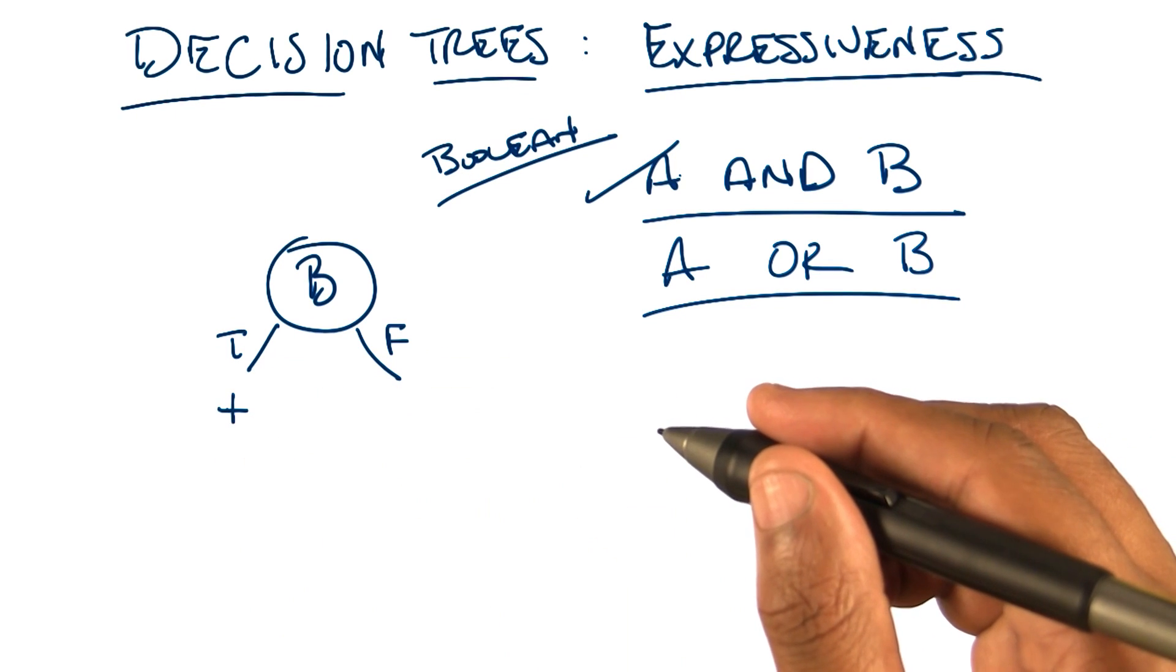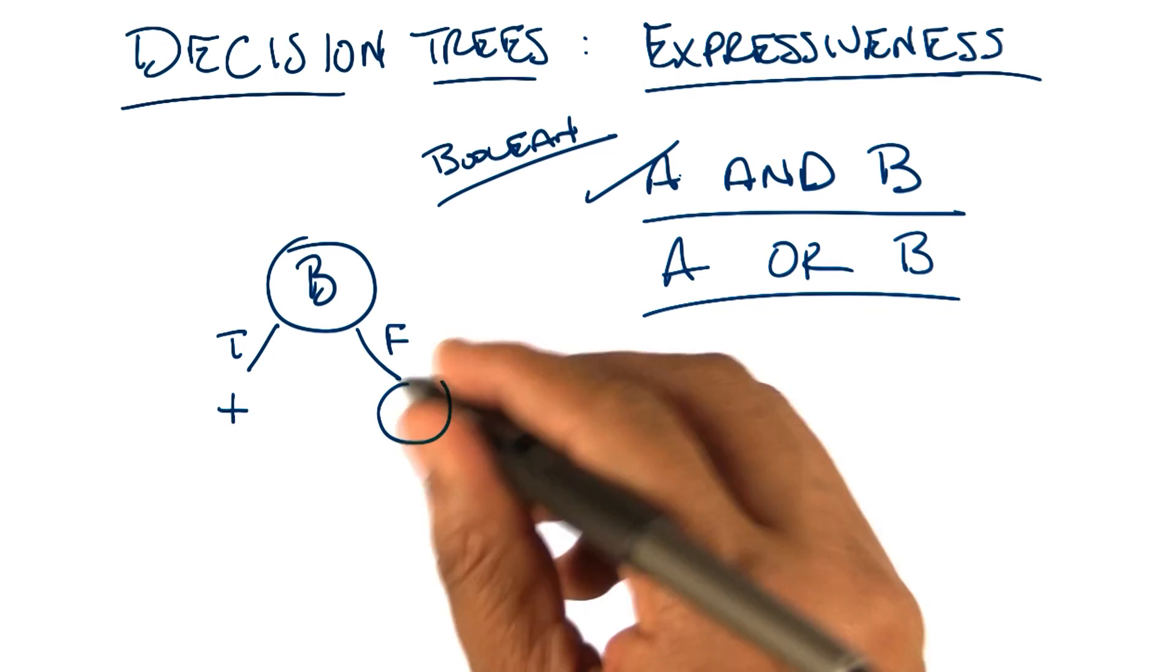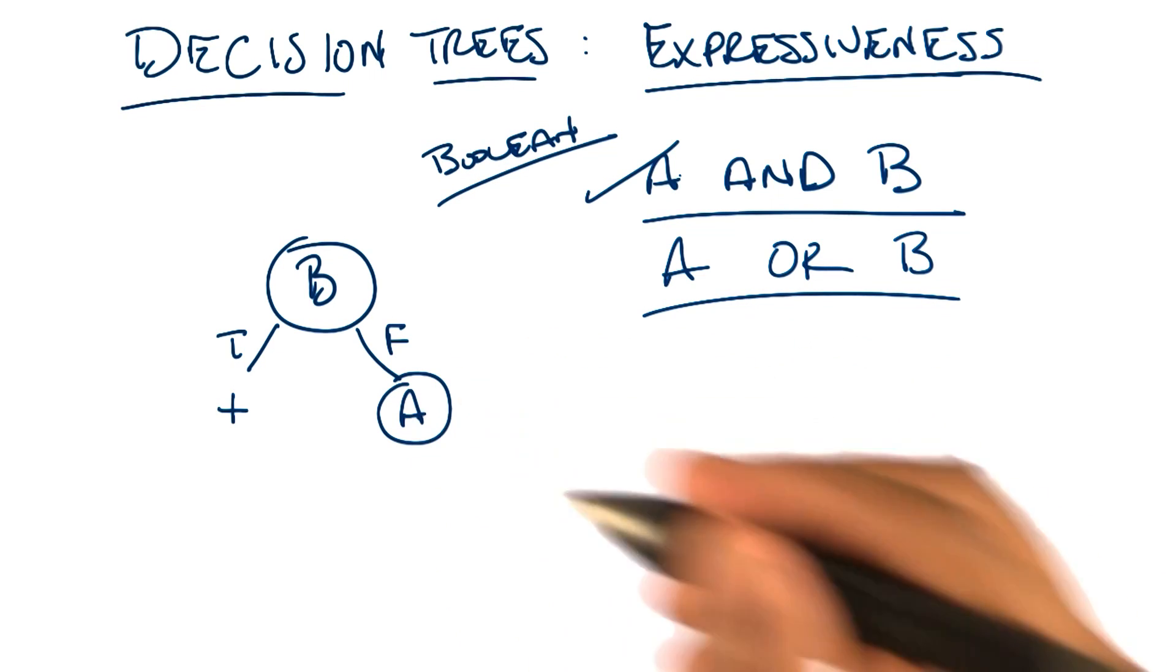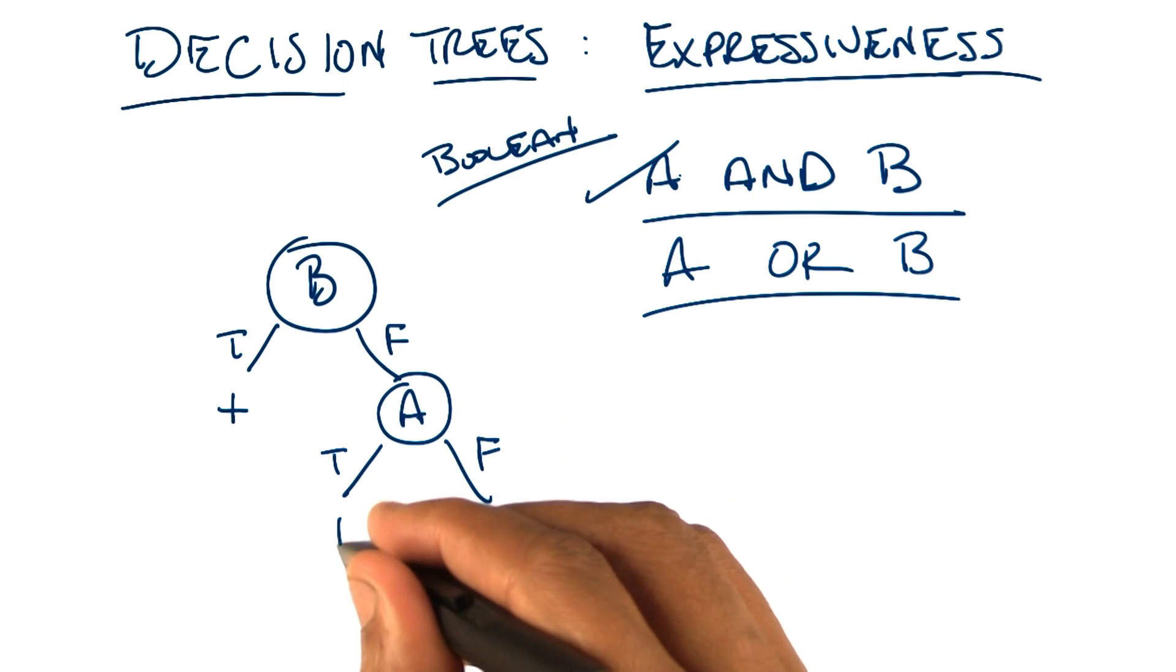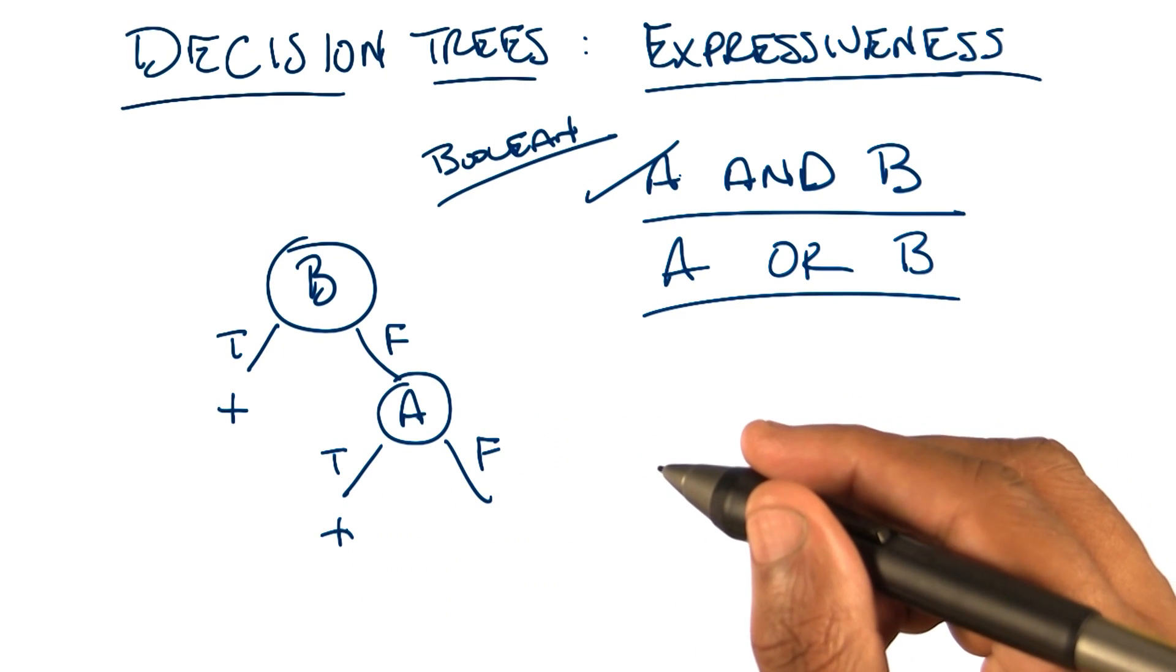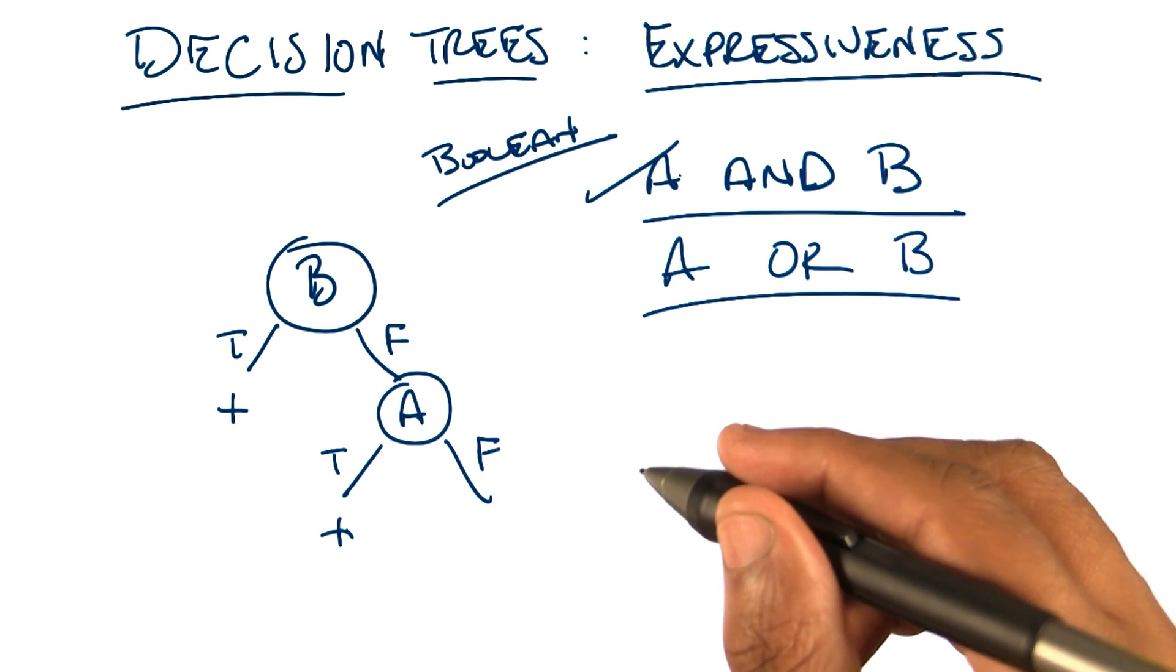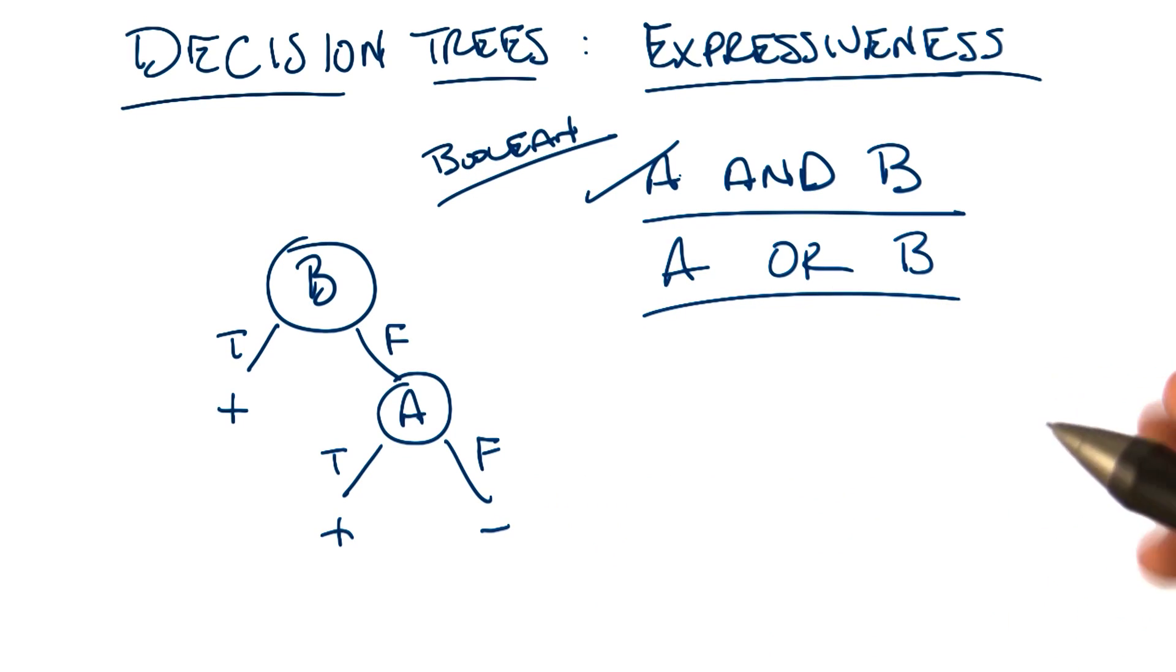Right. But if B is false, then we need to split on A. Okay. And if A is true, then we're golden. We get the or is true. And if A is false, then it is false. Very good. And that represents A or B.